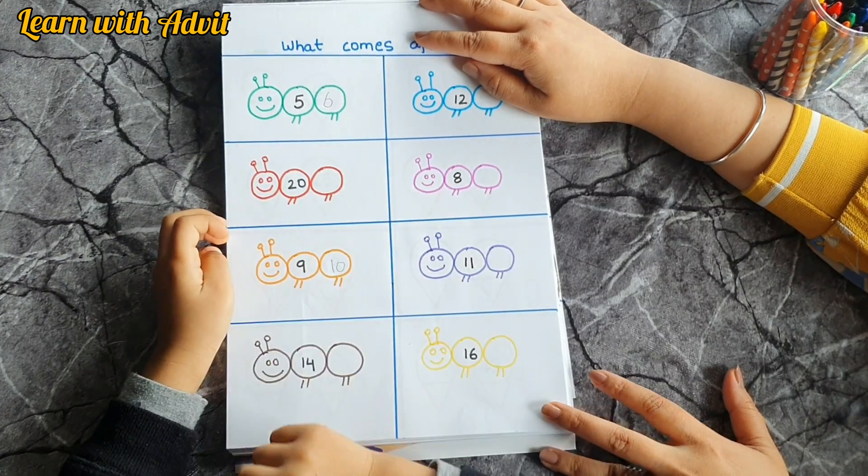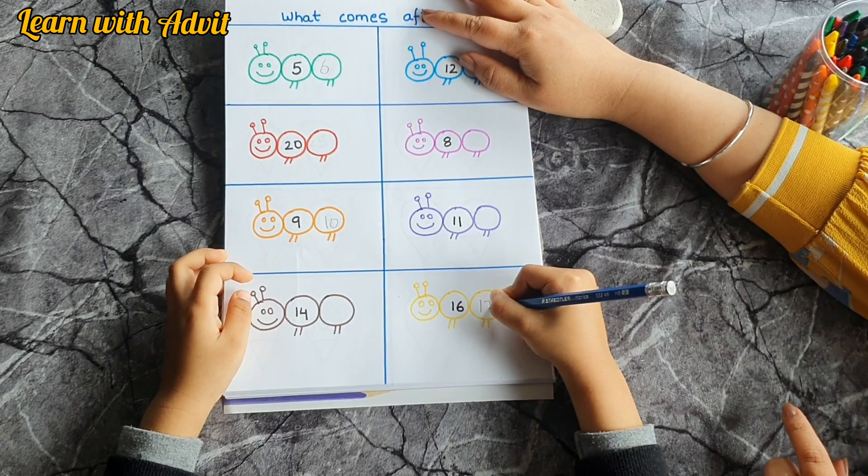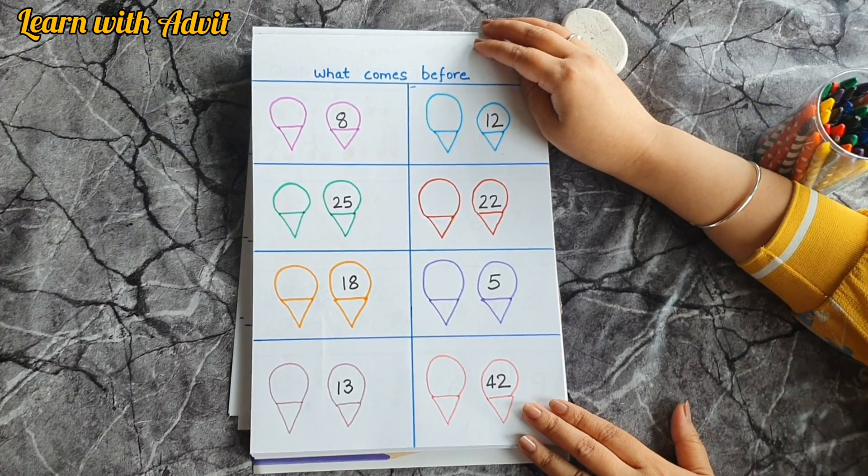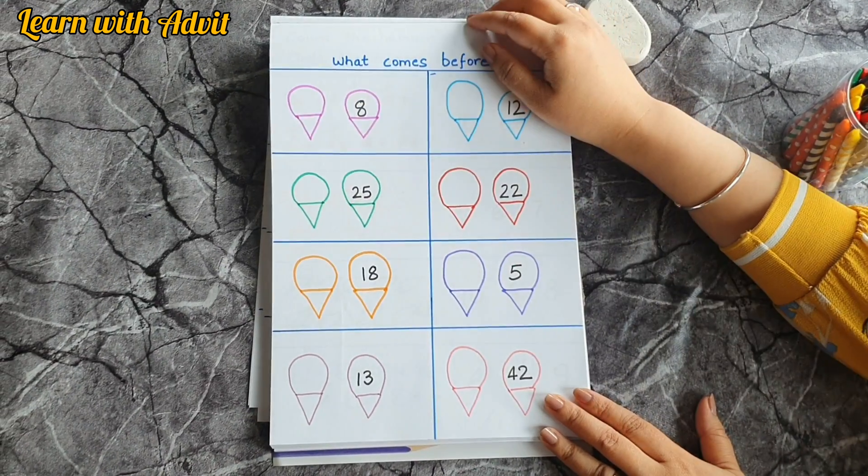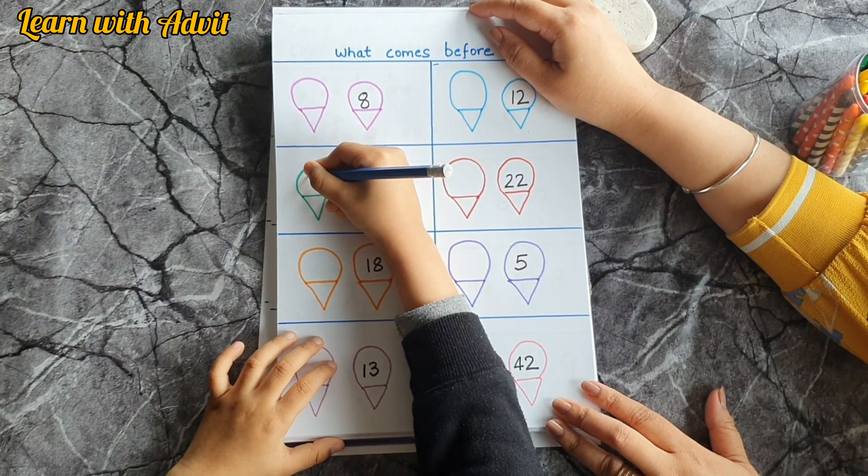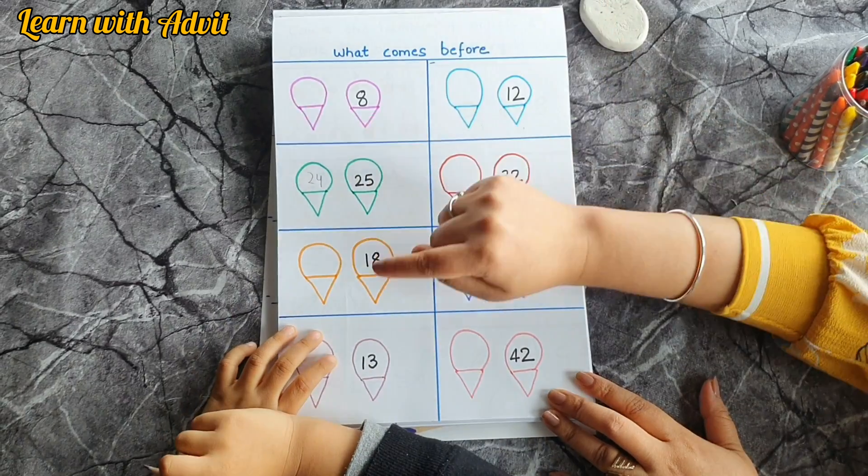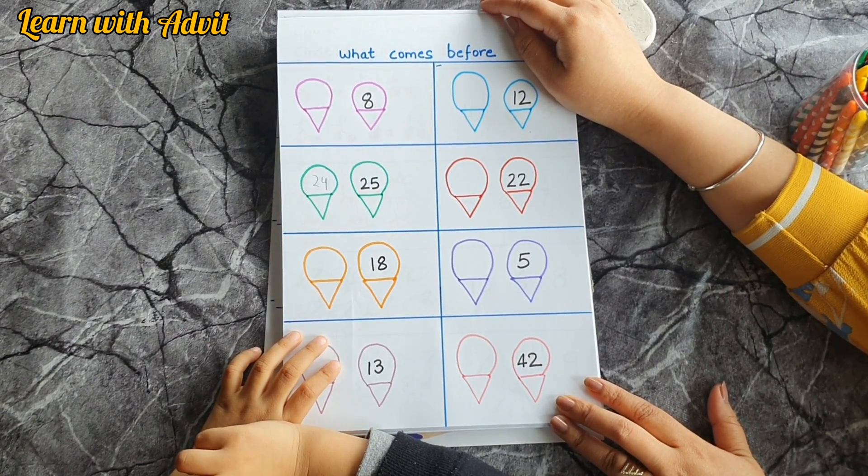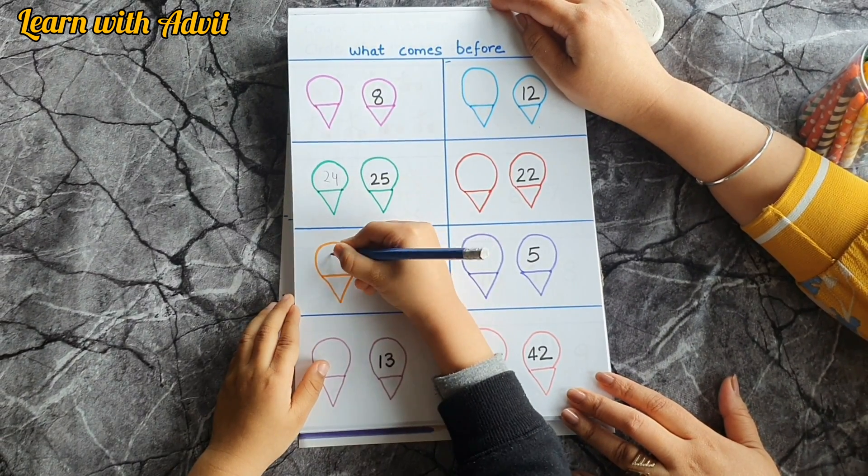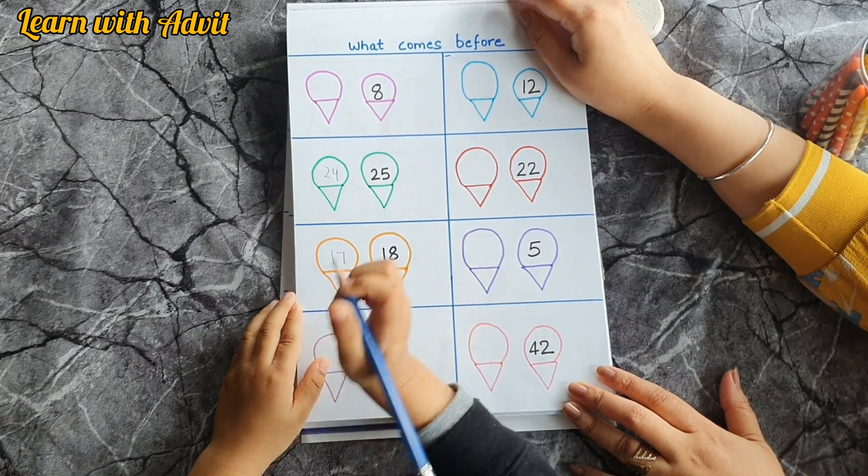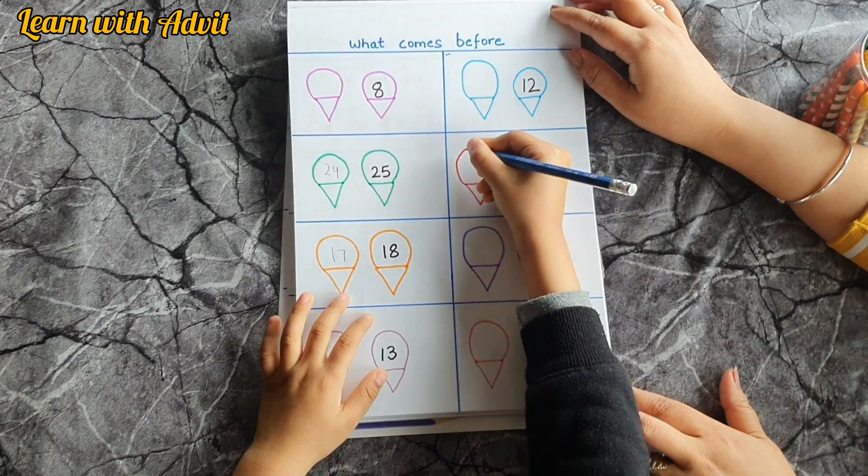This sheet is what comes before. Okay, so what comes before twenty-five? Twenty-five, twenty-four. What comes before eighteen? Before eighteen is seventeen. Okay, right. Before twenty-two? Before twenty-two is twenty-one. Okay, write it down.